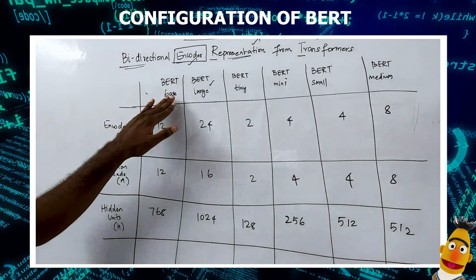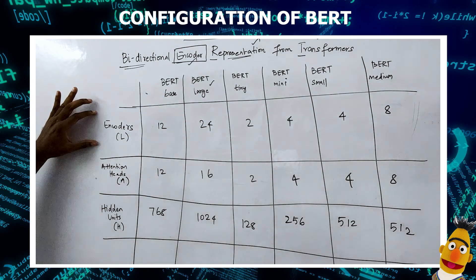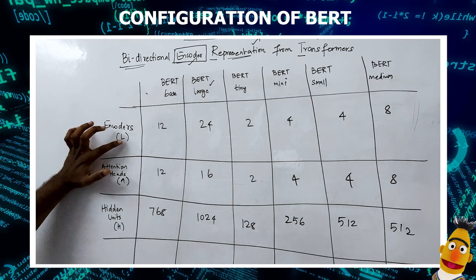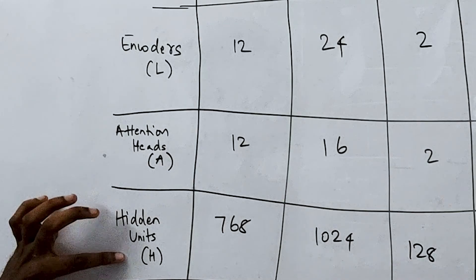Depending on the flavors we have different encoders, different attention heads, and different hidden units. As we saw in the previous video, these are indicated by L, A, and H.